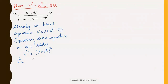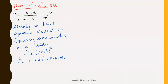Expanding: v² = u² + a²t² + 2·u·at, using the identity (a + b)² = a² + b² + 2ab. Bringing u² to the left side: v² − u² = a²t² + 2uat.